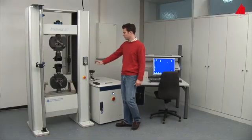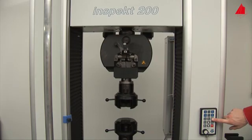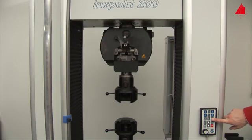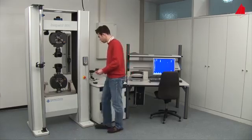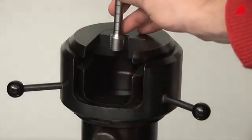Using a hand control, the tester moves the upper crosshead into its correct starting position. Now he can place the threaded ends of the test piece in the lower and upper grips of the testing machine.